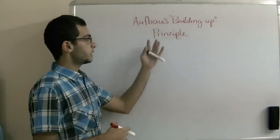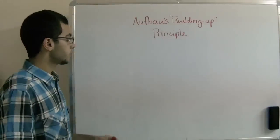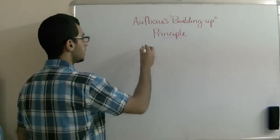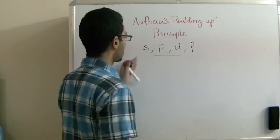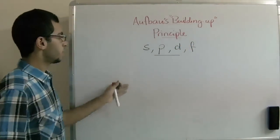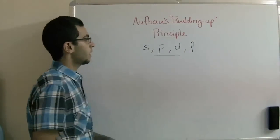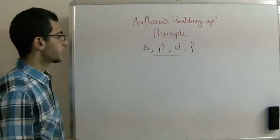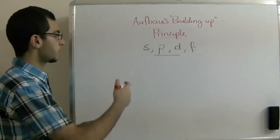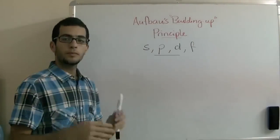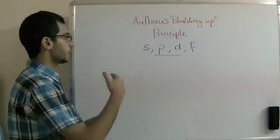The Aufbau's Building Up Principle says that electrons occupy the sub-levels, which are s, p, d, and f, found in every energy level according to its order. The electrons occupy these sub-levels according to the increase in their energy, so that the less energy levels are occupied first, then the higher ones. The electrons fill these energy sub-levels in an ascending order.